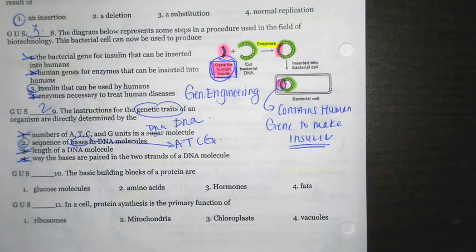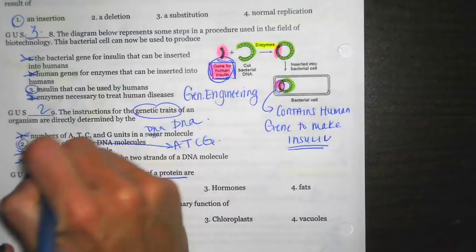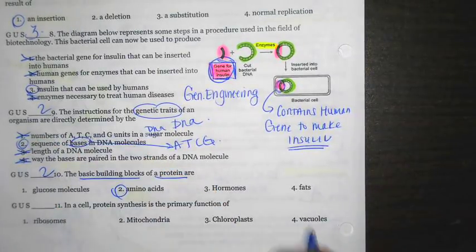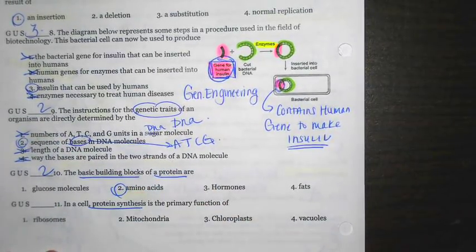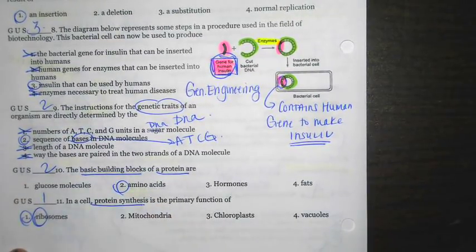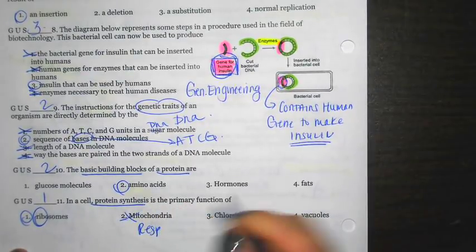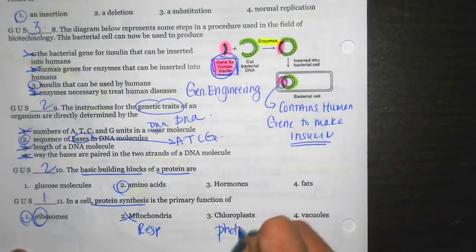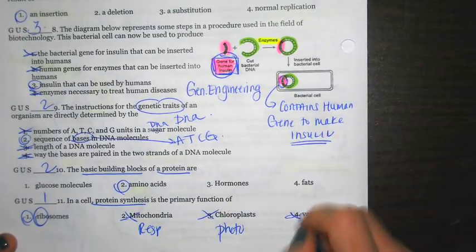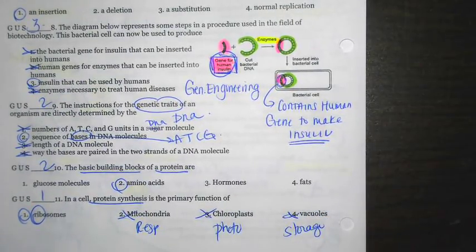The basic building blocks of a protein, this should be straightforward. Building blocks of proteins are going to be amino acids. In a cell, where does protein synthesis take place? Remember rib, we're talking about proteins being made. That's going to be one. Mitochondria is talking about respiration, so you can cross that one off. Chloroplast is talking about photosynthesis. Cross that one off. Vacuole is talking about storage.